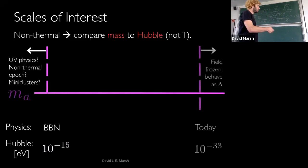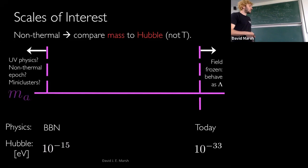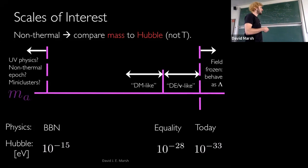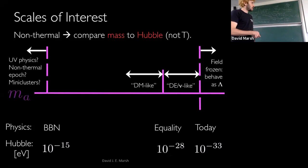The next scale is today. The Hubble scale today — 100 km/s per Megaparsec times the dimensionless Hubble parameter — is about 10^{-33} eV. Anything lighter than 10^{-33} eV is still overdamped by the Hubble friction in the Klein-Gordon equation and basically contributes to Lambda. The next easy one is matter-radiation equality, which happened when the temperature was about 1 eV, at redshift ~3300, and the Hubble scale was about 10^{-28} eV.